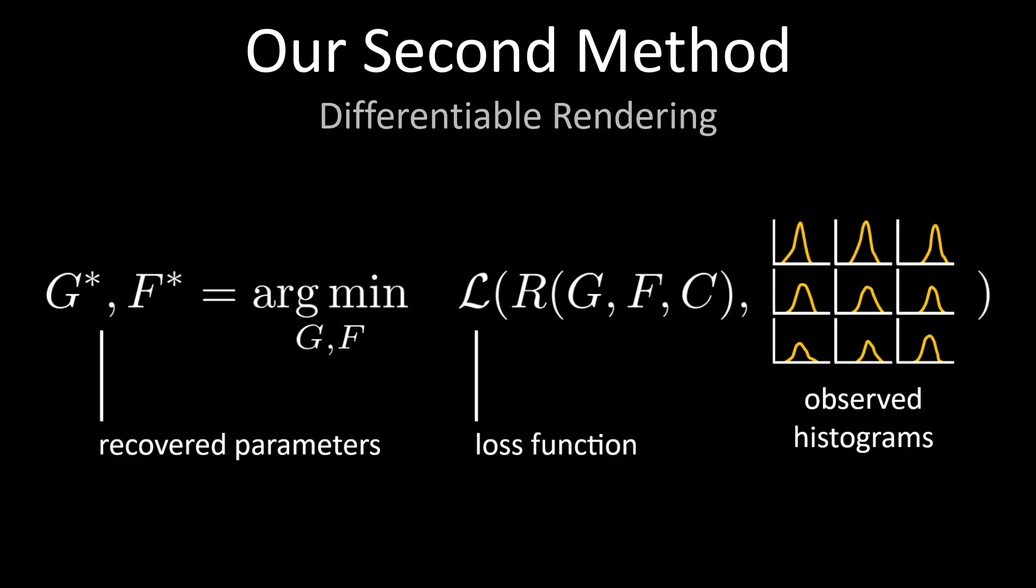To recover scene geometry and albedo from a set of histograms, we optimize the scene geometry and surface reflectance parameters to minimize the reconstruction loss between the rendered and observed histograms. Because the render function is fully differentiable, this optimization is easy to perform with stochastic gradient descent.